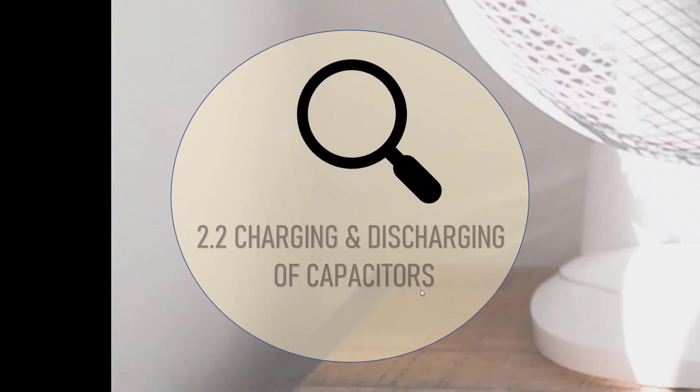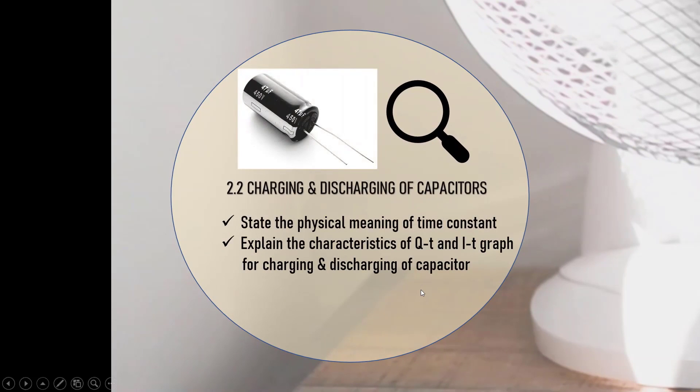In this subtopic, we have two learning outcomes. The first one is to state the physical meaning of time constant. Next, to explain the characteristics of charge against time and current against time graphs for charging and discharging of capacitors.